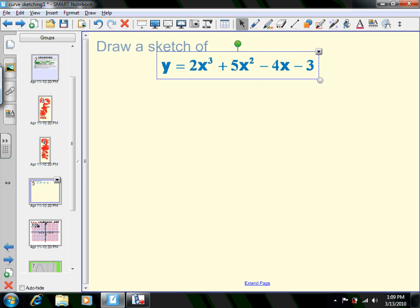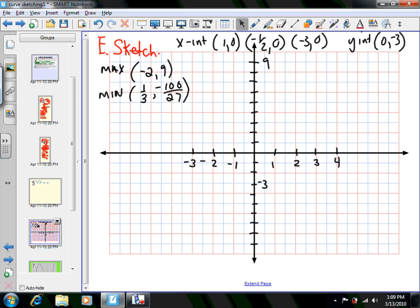Taking a look at the information we have found out, we figured out that we had three x-intercepts at (1, 0), (-1/2, 0), and (-3, 0). We also determined we had a y-intercept at (0, -3). So that's four dots I can place on the graph.